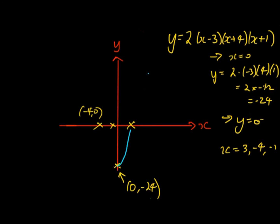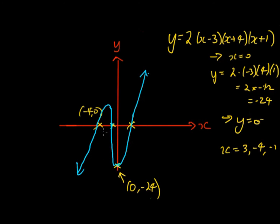Knowing the graph must pass through (0, −24) is crucial. For example, a graph shape that doesn't go through that point would be wrong. Since all brackets are to the power of 1, the graph passes straight through each intercept. You can sketch the shape going through all four known points. The turning points aren't exactly at the intercepts — you'd need to differentiate and set equal to zero to find them precisely.